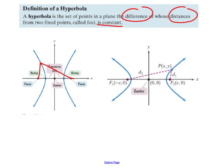So they show that here as well. The difference here, d2 minus d1, will always equal the same amount. The difference between the distances is constant.